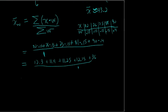So I add up the top. Adding up the top I get 83.1 divided by 1, or 83.1 is the average — the mean score. And this is a weighted mean.